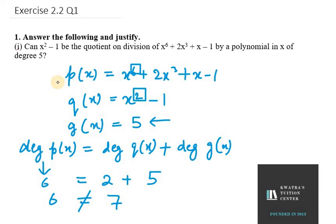So if they are not equal, then we can say that this equation is impossible here. So this will be false here. So that's your answer for the first part.